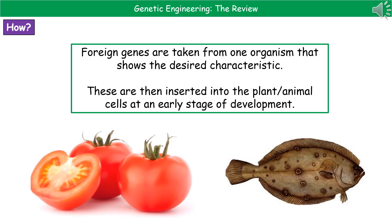For our tomatoes, they used to be really susceptible to frost. So if we had a hard frost, a lot of the tomatoes would be ruined. What we've actually done is we've taken the antifreeze gene from the flounder — the fish on the right there — and inserted it into tomato plants. Now we have varieties of tomato plants that are very frost resistant, so they're not going to be as susceptible to a frost.